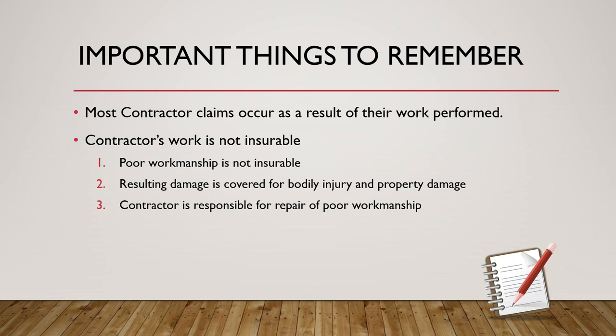Some important things to remember: most contracting claims occur as a result of work performed. While the contractor's work itself is not insurable, the resulting damage from the work performed would be covered for bodily injury and property damage. So if your client repaired something poorly, we're not going to pay to fix that work, but whatever damage happened because of that poor work would be covered. For example, if the client is doing some tree trimming work and a limb went through a window — we see a lot of those claims. Or a contractor clipped a water line underground, causing a huge flood — we're going to cover the damage from the flood, but the contractor is responsible for fixing that water line.